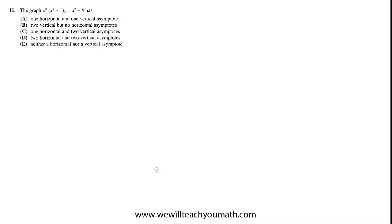Enjoy, and thanks for watching. Problem 11: The graph of (x squared minus 1) times y equals x squared minus 4. They want to know how many asymptotes and what types of asymptotes it has. One way you might consider doing this is to just get y by itself, plug it into your calculator, and take a look.